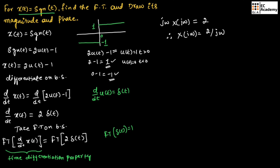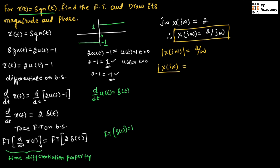Now we need to draw the magnitude and phase. For the magnitude of X(jω), we write it as 2 divided by |ω|, since we consider only the magnitude. For the phase of X(jω), remember that we take the tan inverse of the imaginary part divided by the real part. Also, this tan inverse should be taken as negative for denominator terms and positive for numerator terms.